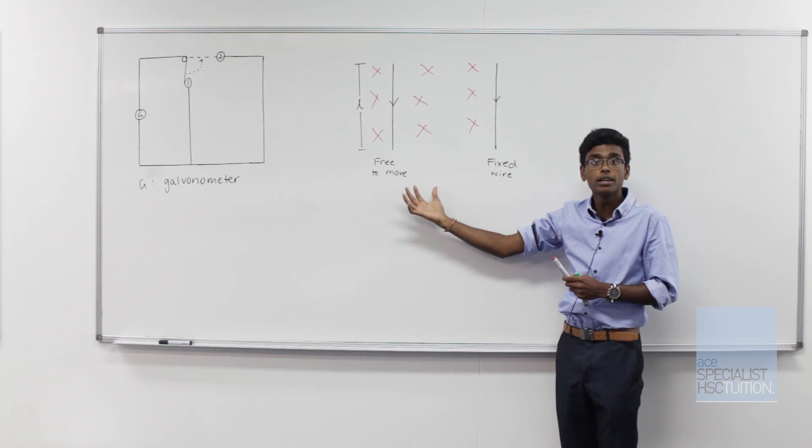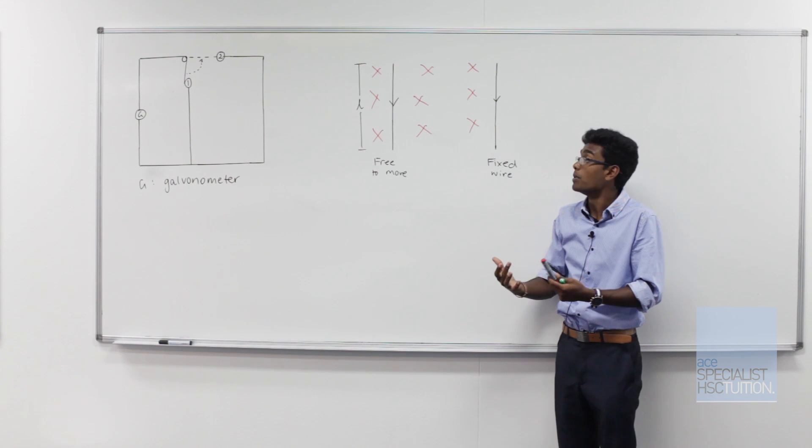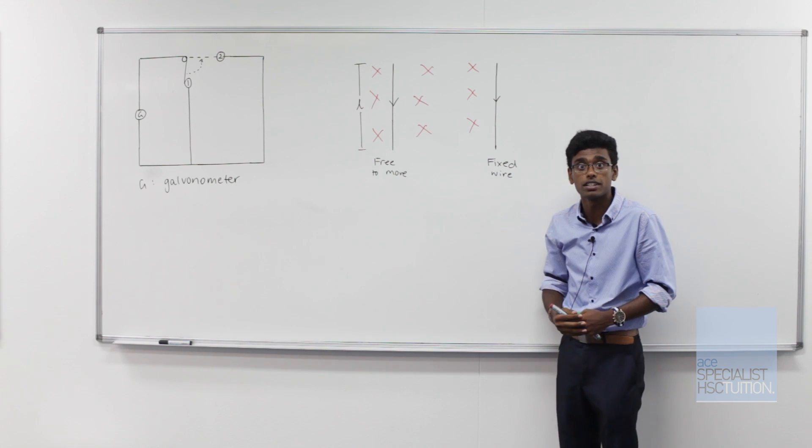So my freely moving wire is sitting in a magnetic field which is going into the page. We know when we have a wire in a magnetic field it's going to experience a force given to us by the motor effect.